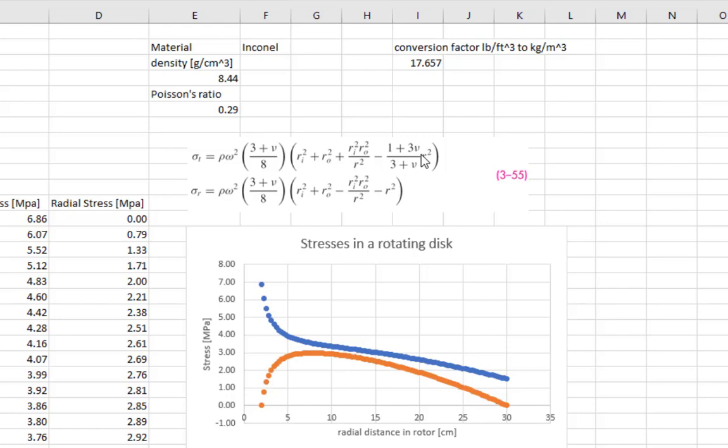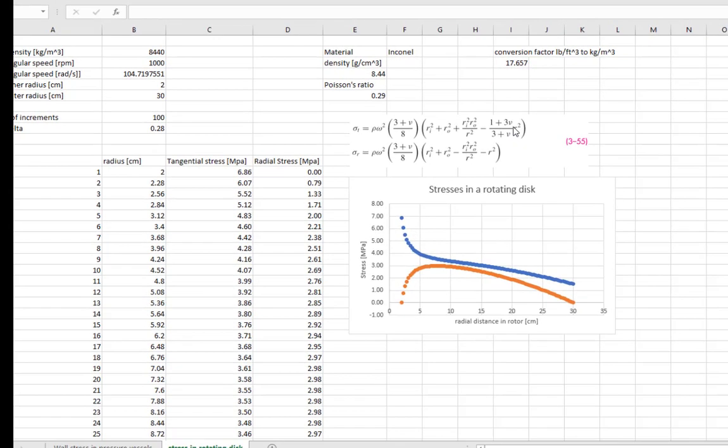Now keep in mind that these equations only apply for true thin discs where the thickness of the disc is small compared to the outer radius. If we take those equations and enter them into a spreadsheet, we begin at the inner radius. I always do increments of 100. So I take the distance between the inner and outer radius, divide it by 100, and I add those little increments to move from, in this case, 2 centimeter inner radius to a 30 centimeter outer radius.